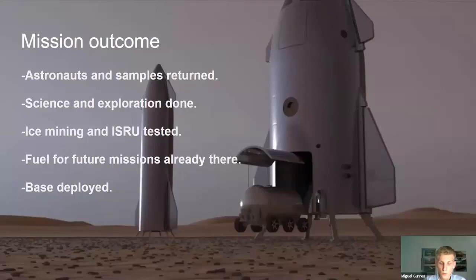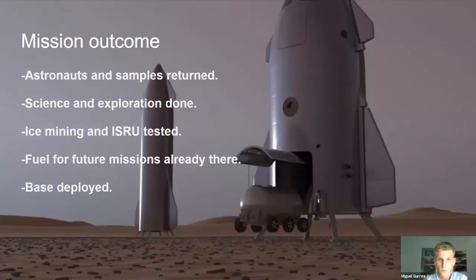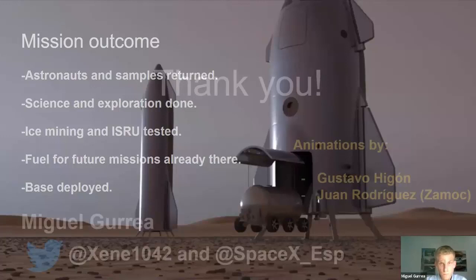If everything goes well, the astronauts return safely to Earth bringing important samples. Science and exploration will have been done on the surface of Mars. Ice mining and ISRU will have been tested on the surface. Fuel for future missions will already be there if there are leftovers and they have produced fuel from the ice. The initial base will have been deployed — setting the first stones for a sustainable settlement on Mars.